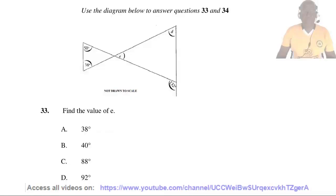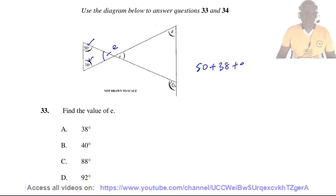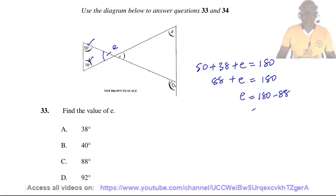Use the diagram below to answer questions 33 and 34. Question 33. Find the value of E. Angle E is vertically opposite an angle in the triangle, so it equals E. The sum of angles in a triangle equals 180 degrees. So 50 plus 38 plus E equals 180, giving 88 plus E equals 180, therefore E equals 180 minus 88 which equals 92. The answer is D.